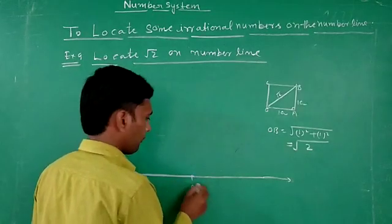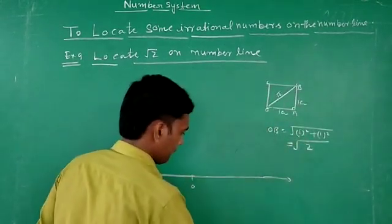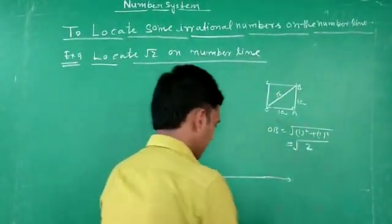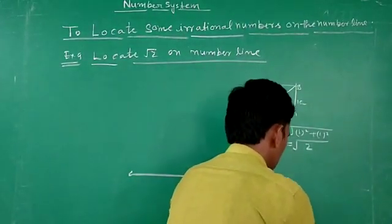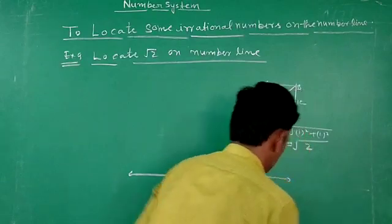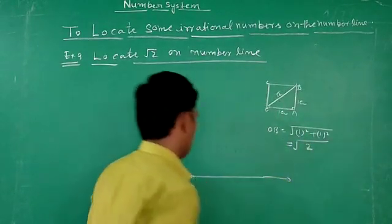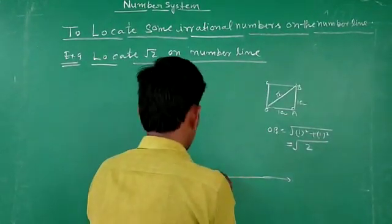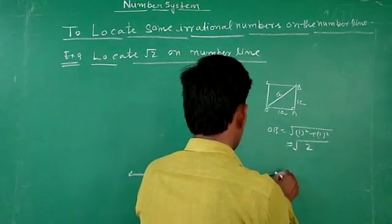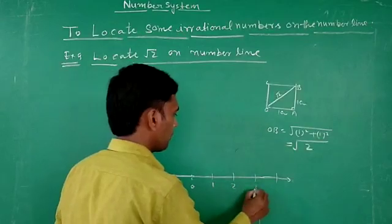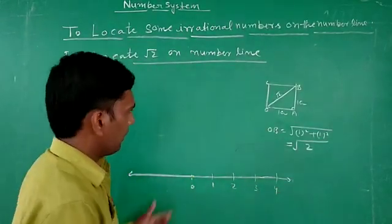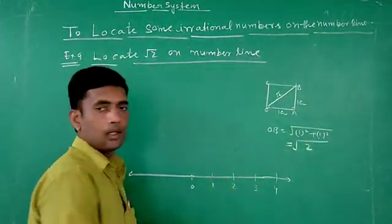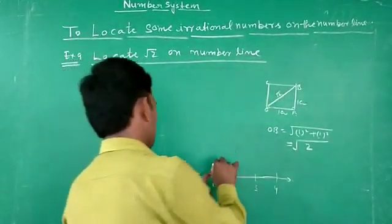This is the number line. Suppose here is the scale. This scale starts at 0, with markings at 1 cm, 2 cm, 3 cm, and 4 cm. At this point we have a 90 degree angle drawn.